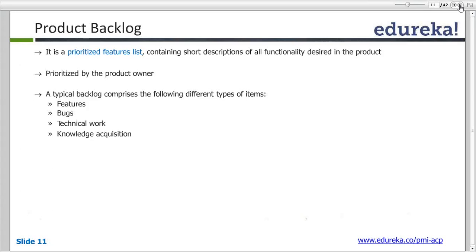So here comes product backlog. This product backlog is analogous to your SRS document in the waterfall model. So what does a typical SRS document have? It has out of scope, in scope, and a complete list of features with a detailed description of what each feature does.